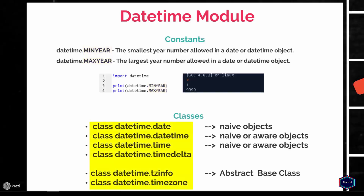The six different classes provided by the datetime module are: date, datetime, time, timedelta, tzinfo, and timezone.